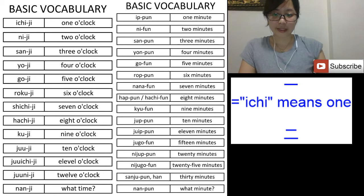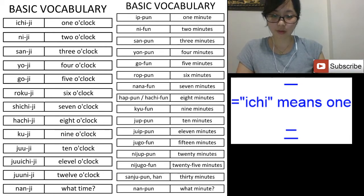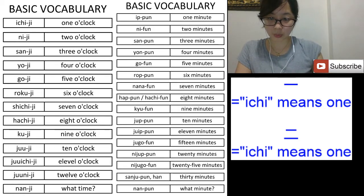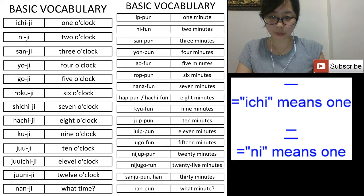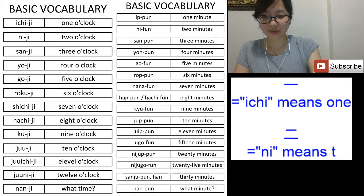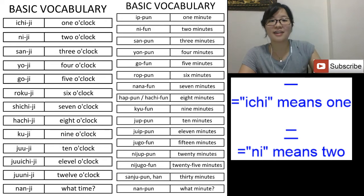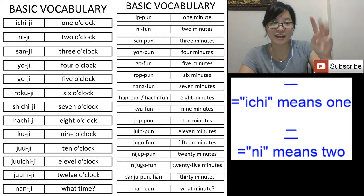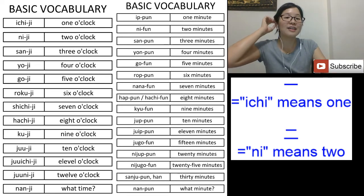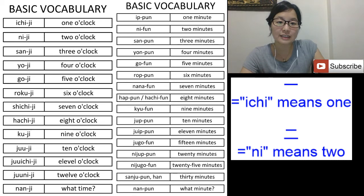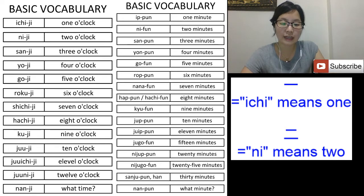This character means 'two', so 'ni' means two. It's very simple — the kanji for one is just one line, kanji for two is two lines, and kanji for three is three lines. But for four, we write it in a different way.